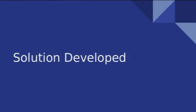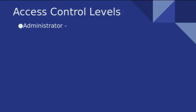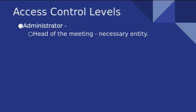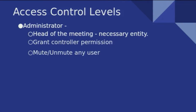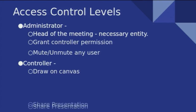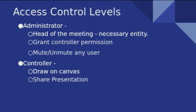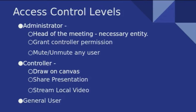Let's talk about the solution that we developed. We have three different access control levels. First is the administrator — he is the head of the meeting, the necessary entity. He can grant controller permissions, and he can mute or unmute any meeting participant. The controller can draw on the canvas — we have a whiteboard where the controller can draw — he can share his presentation as a PPTX file, and he can stream local videos. And then we have a general user. To elaborate on the features, Omkar.